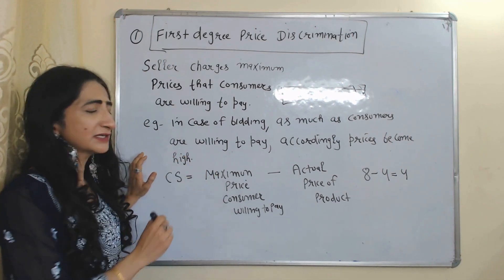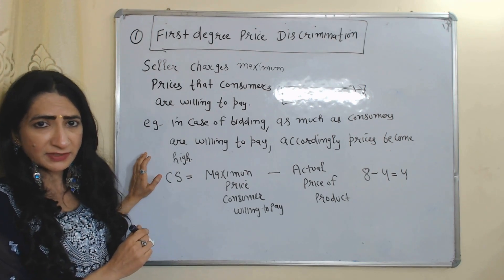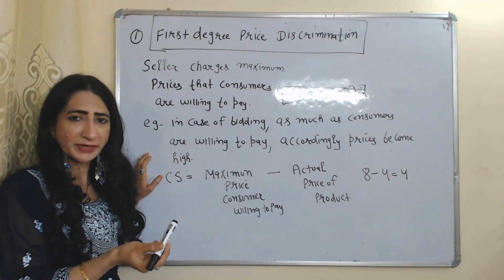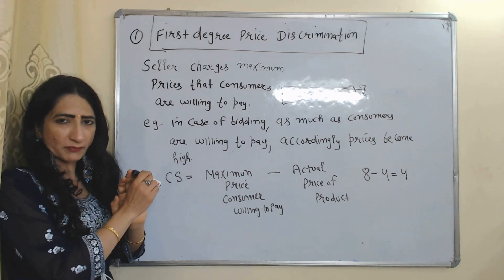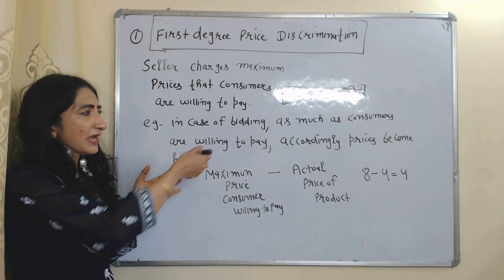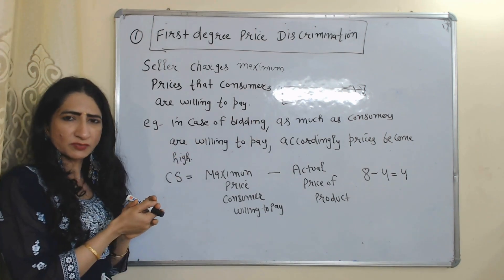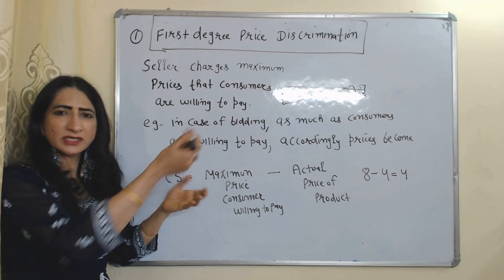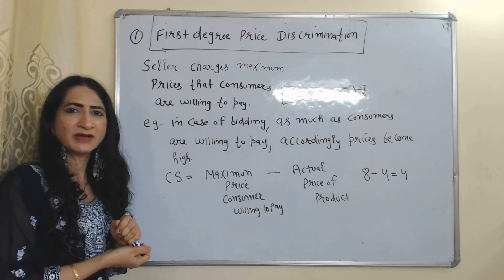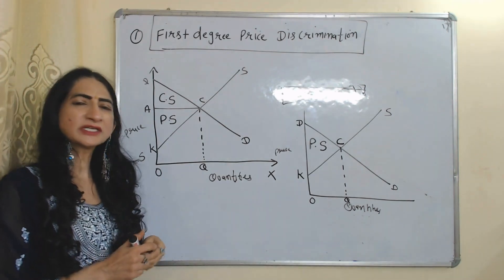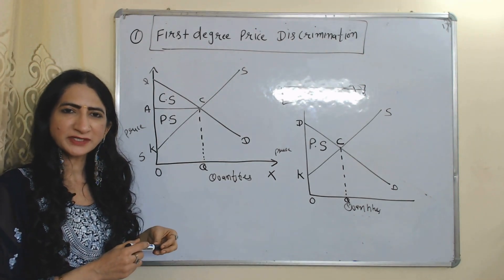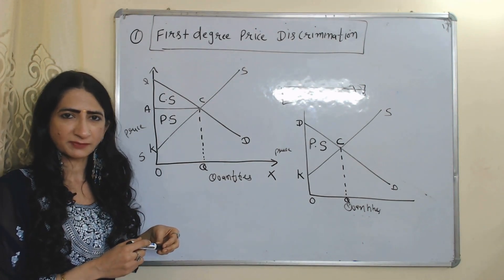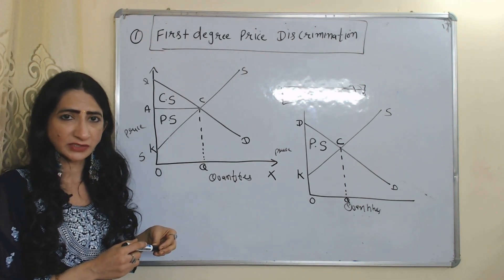First degree price discrimination is possible in case of bidding. In bidding, as much as a consumer is willing to pay, the price becomes higher accordingly. So in case of first degree price discrimination, consumer surplus is zero.